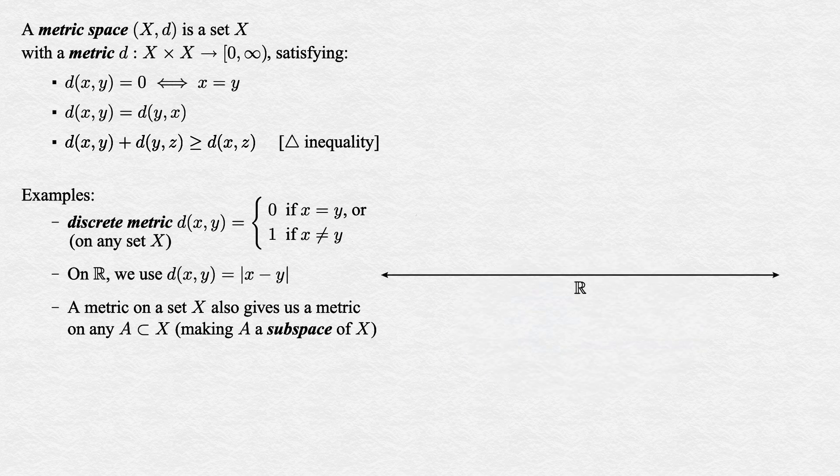For example, the real line forms a metric space as above. So every interval in the real line can be considered as a metric space. The same could be said for any subset of the real line.